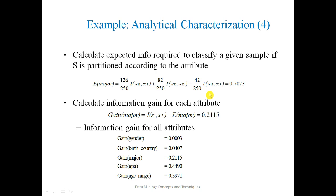This entire process is done for each attribute. We have to find the information gain for gender, birth country, major (which is 0.2115), GPA, and age range. Here are the final information gain answers for all the attributes. Thank you for watching.